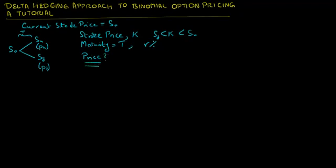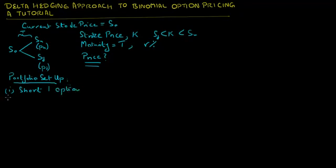To price this option, we will set up a portfolio using an option and shares such that the portfolio is riskless at maturity of the option. The portfolio setup is as follows: we short one option and long delta shares. The idea is to take a position in underlying shares such that the portfolio becomes risk-free when the option matures at time T.